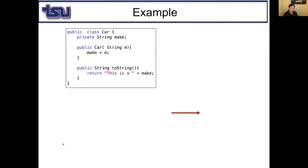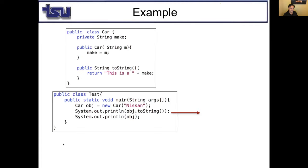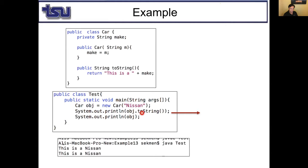If I have an overridden toString implementation this time, since I have the overridden method, it will say 'This is a Nissan.' Whether you call toString directly or just use obj, it calls the Car class toString method.